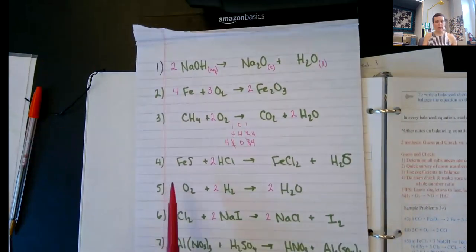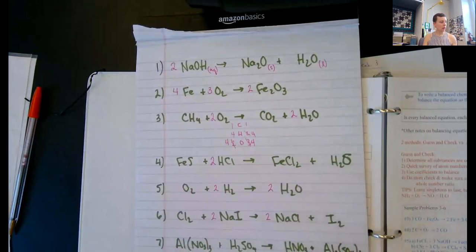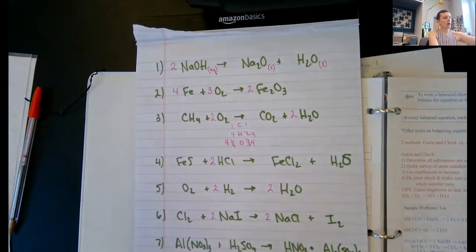I have two oxygens in the carbon dioxide and I have two oxygens now over here because I have two waters. So I have a total of four oxygen. Now I can fix my oxygen because it's the only thing left that's not balanced. There's two on this side. So I need to double that in order to get to four oxygens there. Number four, when you have it balanced, it should be one, two, one, one. Number five: one, two, two. Number six: one, two, two, one.